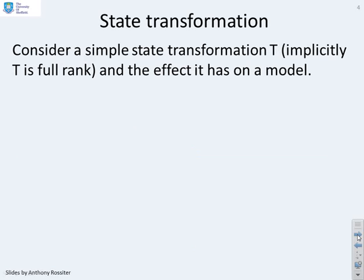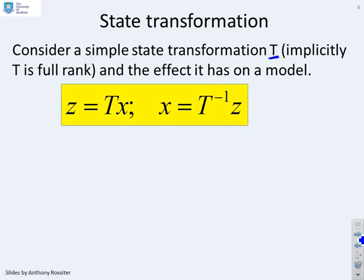We're going to introduce the concept of a state transformation using a simple state transformation defined using a matrix T, where implicitly T has to be full rank, and we're going to look at the effect of this transformation on a model. What does this transformation mean? It means we're going to define a new state vector z as being a transformed variant of an original state x. So z equals Tx. And we can go both ways. Therefore, it's implied that x equals T inverse z.